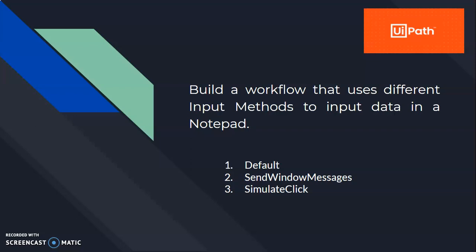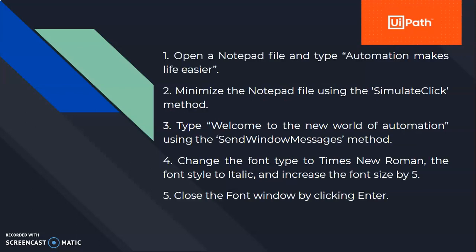There are three ways of inputting data into various kinds of applications. The first one is the default method. The second one is the send window messages method, which works by sending a specific message directly to the target application. The third one is the simulate click method, which provides a faster way of performing click actions — it doesn't rely on the mouse driver but performs click actions on its own in a much faster and better way.